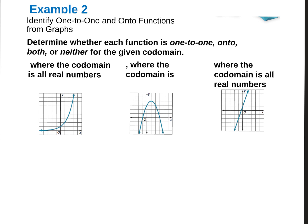Here are some examples to identify one-to-one and onto functions. For the first one, the codomain is all real numbers. For the second one, the codomain is given in set builder notation: y such that y is less than or equal to 4, which in interval notation is from negative infinity to 4, including 4. The codomain for the last one is all real numbers.